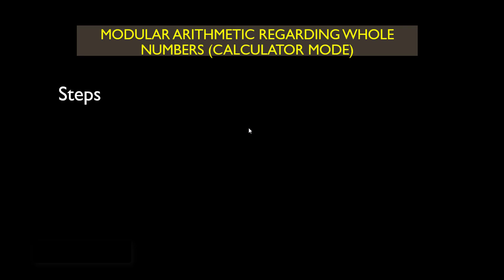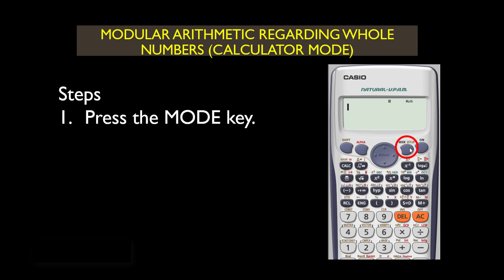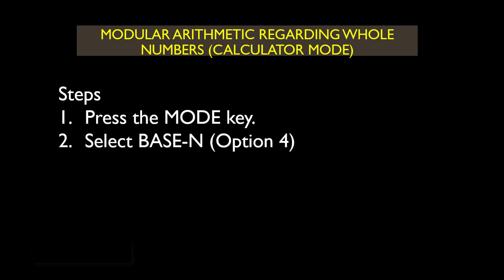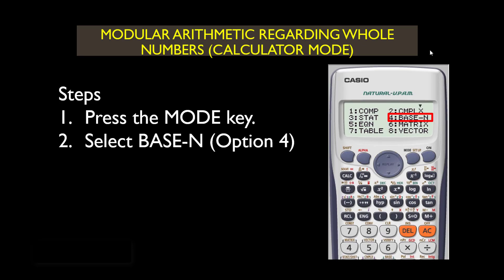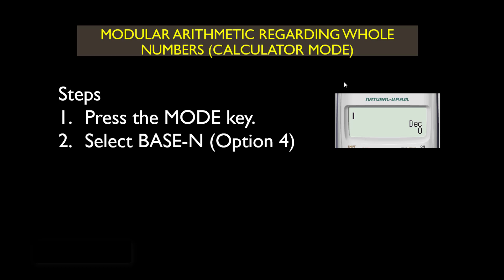Now let's look at some steps when calculator use is involved — for positive or whole numbers only. Step 1: press the mode key, shown circled on screen. When you press the mode key, another option follows and you select base-N, which is option 4. By default the base will be base 10, which is decimal. This gives you a display with the cursor and DEC, standing for decimal.